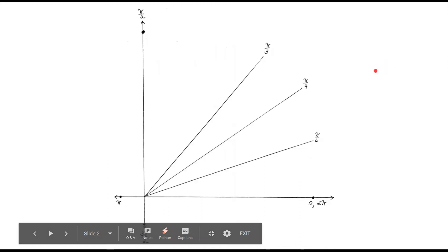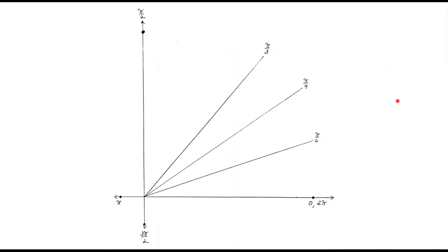So let's get started. The first thing that you're going to do is you're going to draw the first quadrant of the unit circle, and notice that we have pi over 6, pi over 4, and pi over 3.